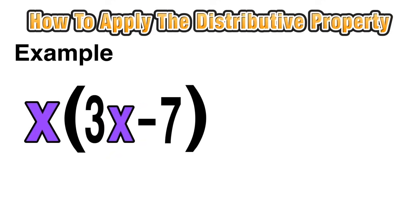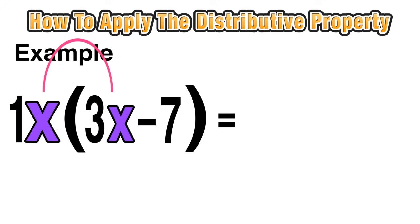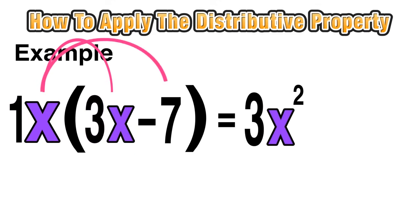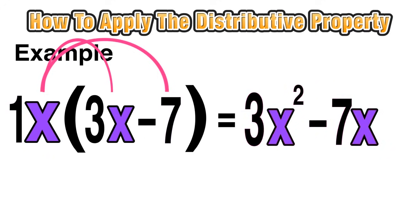In our final example, we use the distributive property to simplify x multiplied by the difference of 3x minus 7. We're distributing a variable here — we can think of x as 1x. So 1x times 3x equals 3x squared, and 1x times negative 7 equals negative 7x. That simplifies to 3x squared minus 7x. You can show all your steps or skip to the final answer — either way is fine if you're comfortable.